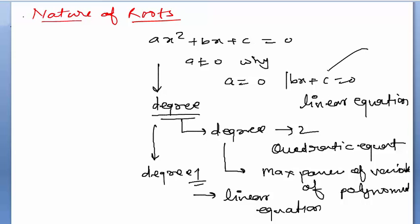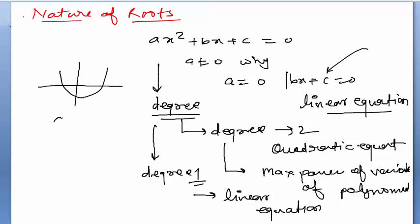As you can see, if a equals 0, then the equation becomes bx + c, which is a linear equation. That is why a is not equal to 0 in the standard form ax² + bx + c = 0. The graph of this equation is a curve — let's consider the case where a is greater than 0.